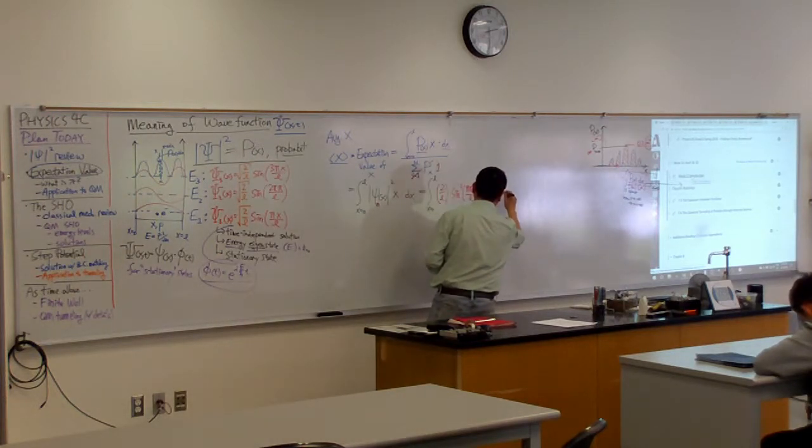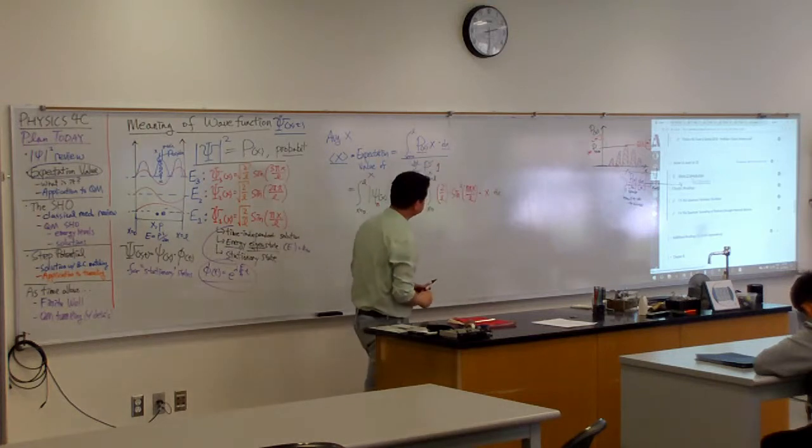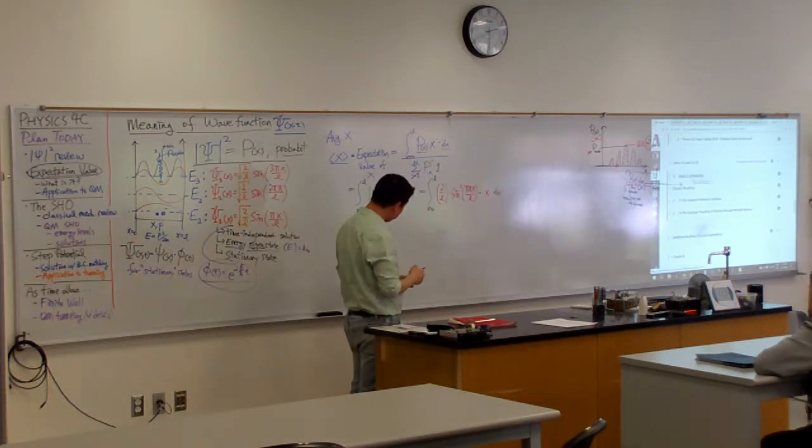After doing square, we get 2 over L times sine square of n pi x over L times x dx. I think I want to write this in black. Anybody here know how to do this integral?